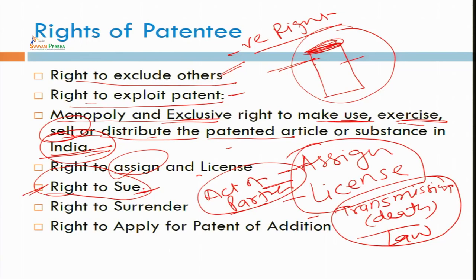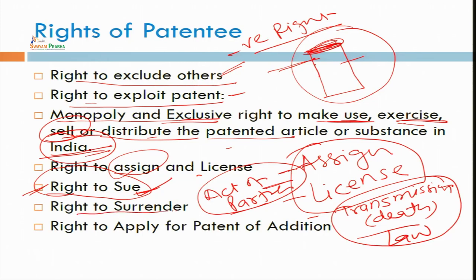We will discuss those case laws in patent infringement and remedies in the next lecture. What I want to say here is that this registration gives you a monopoly right, registration gives you the right to sue, and registration is important as it is prima facie evidence of your registration. So you should go for registration. You can file a case, and you also have the right to surrender.